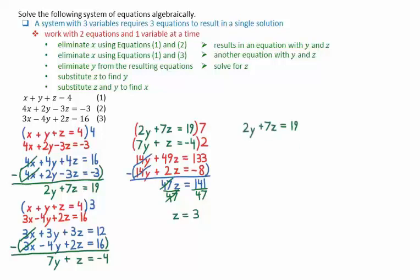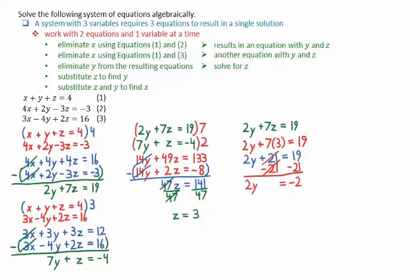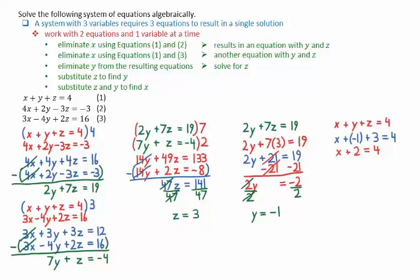We can substitute z equals 3 into either of the two equations — for example, 2y plus 7z equals 19. Substituting z equals 3 and subtracting 21 from both sides gives 2y equals negative 2. Dividing both sides by 2 gives y equals negative 1. We can then take the first starting equation, x plus y plus z equals 4, and substitute z equals 3 and y equals negative 1. This gives x plus negative 1 plus 3 equals 4, which simplifies to x plus 2 equals 4. Subtracting 2 from both sides gives x equals 2.